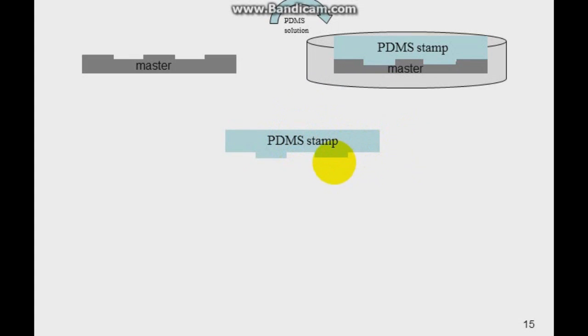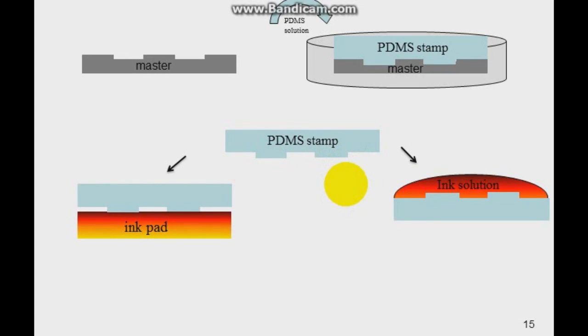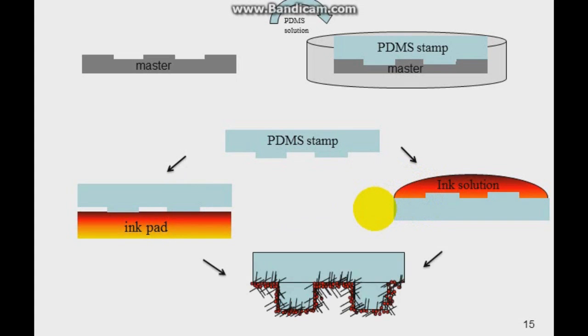Now that we have the PDMS stamp, we need to dip it in our ink or the substance that we want to add to the surface of our material. Our ink in this case would be the thiol solution. There are two ways you can add the thiol onto the PDMS surface. First, you can use the ink pad where you just dip the PDMS stamp onto it. Or, another way would be you can just pour the ink solution onto the PDMS surface, and in both cases, you would end up with these thiol molecules or the ink sticking on the surface of our PDMS stamp.